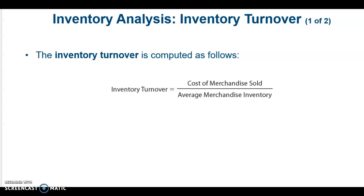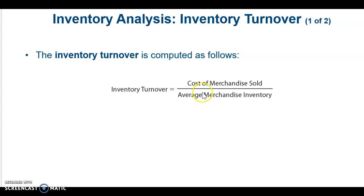The inventory turnover ratio tells us the number of times a company sells its average level of merchandise inventory during the year. To calculate this, take cost of merchandise sold from the income statement and divide it by average merchandise inventory — that's beginning balance plus ending balance divided by two. Remember, inventory is found on the balance sheet.